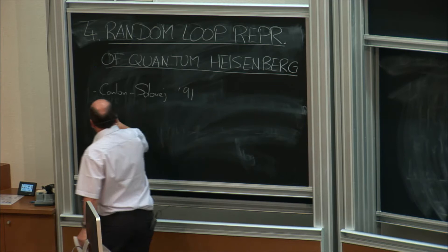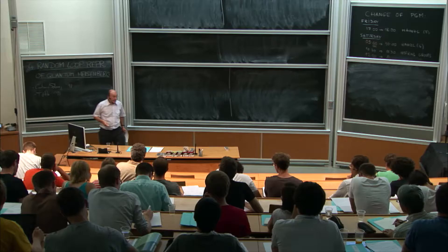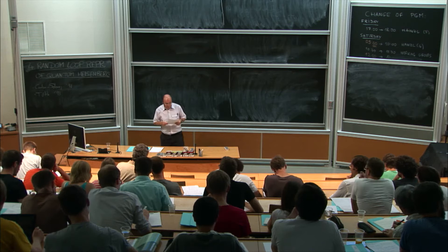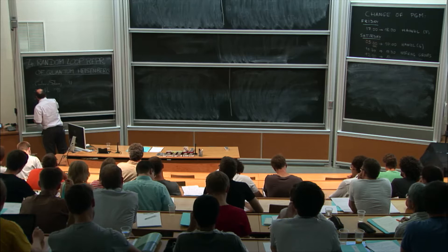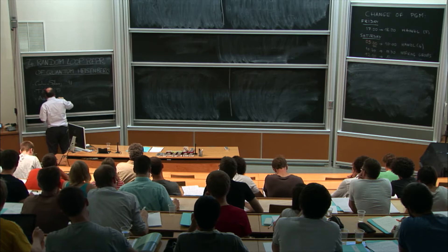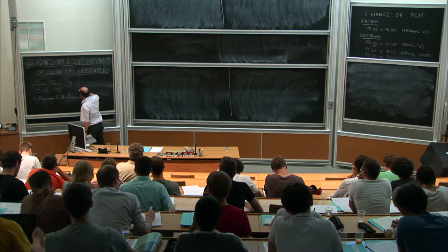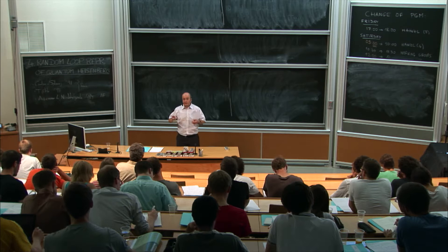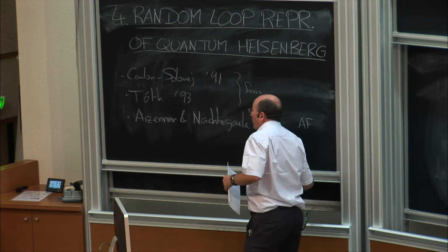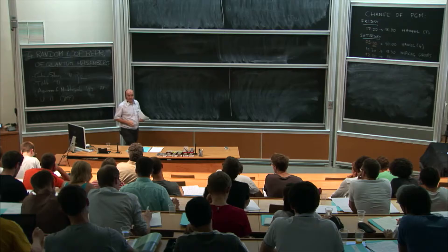That was in 1991. This prompted Balintot to improve the bounds, and he used — in 1993, exactly 20 years ago — a random-loop representation, which is going to be a special case of what we see today. Almost at the same time, there is a beautiful work by Eisenmann and Nachtergale in 1994. Those two papers were for the ferromagnet, while Eisenmann-Nachtergale is for the Heisenberg anti-ferromagnet, introducing similar yet different objects.